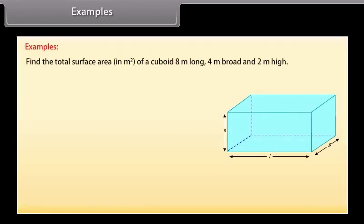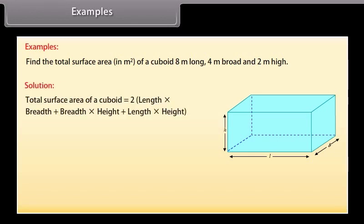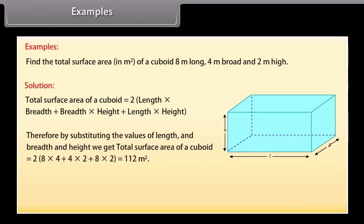Example: Find the total surface area in square meters of a cuboid 8 meters long, 4 meters broad, and 2 meters high. Solution: Total surface area of a cuboid = 2(L×B + B×H + L×H). Substituting the values: 2(8×4 + 4×2 + 8×2) = 2(32 + 8 + 16) = 2 × 56 = 112 square meters.